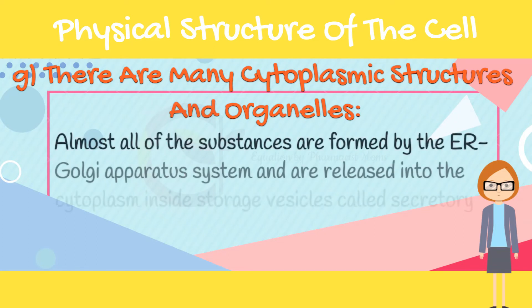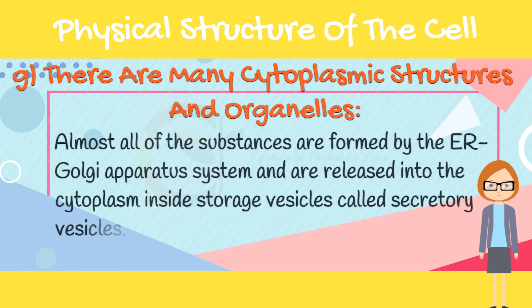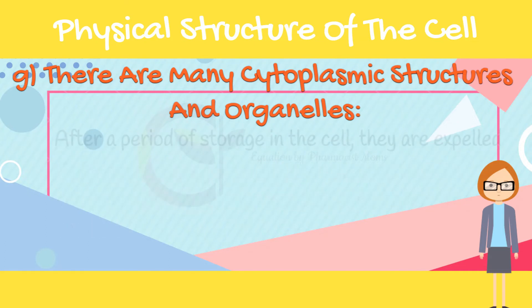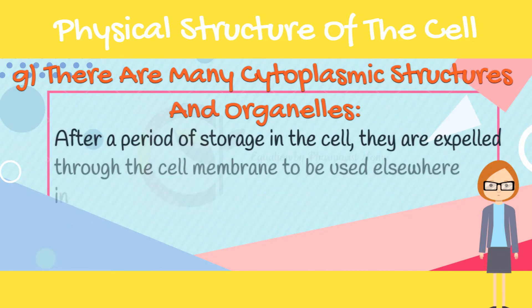Almost all of these substances are formed by the endoplasmic reticulum and Golgi apparatus system, and are released into the cytoplasm inside storage vesicles called secretory vesicles. After a period of storage in the cell, they are expelled through the cell membrane to be used elsewhere in the body.